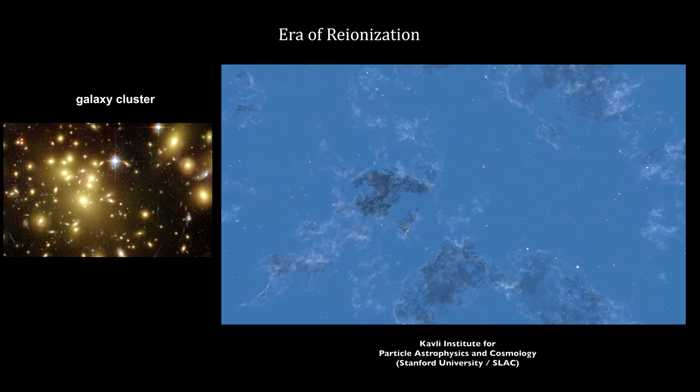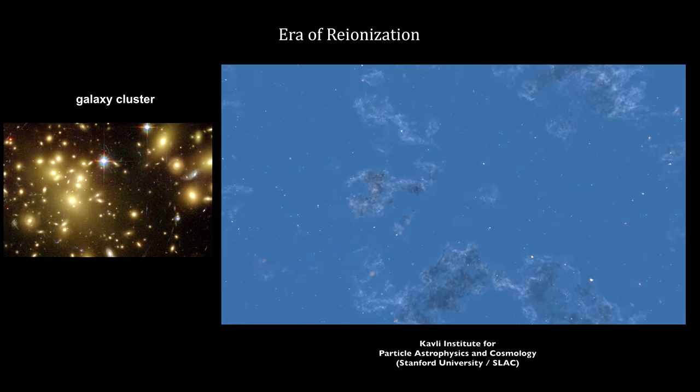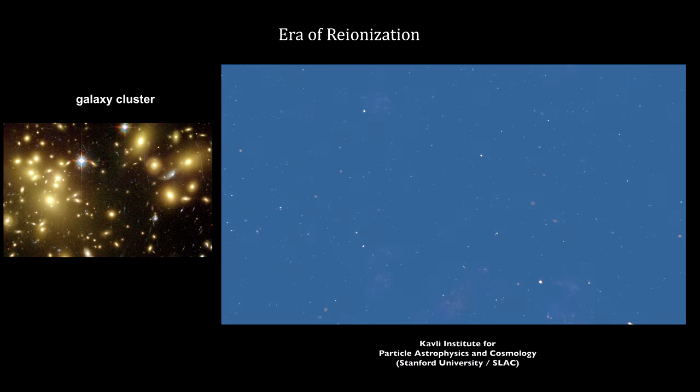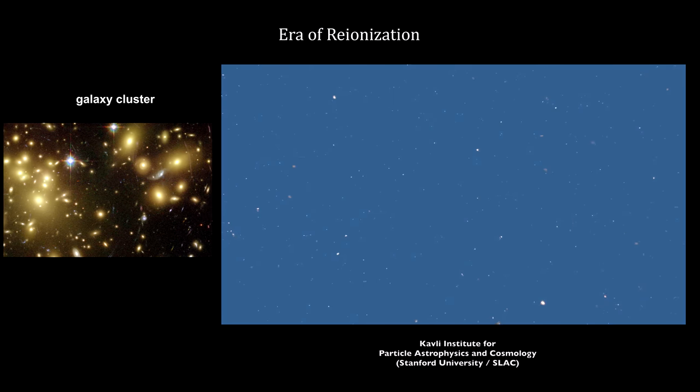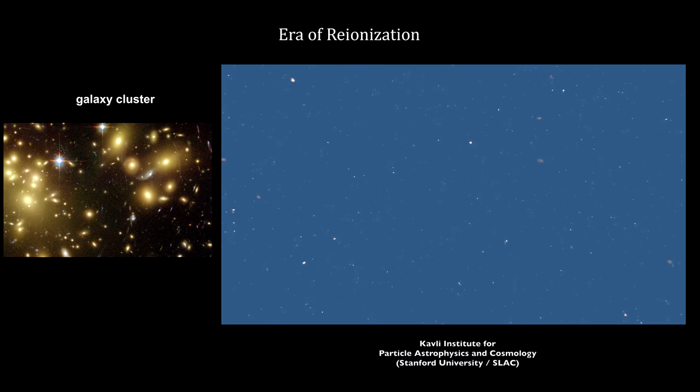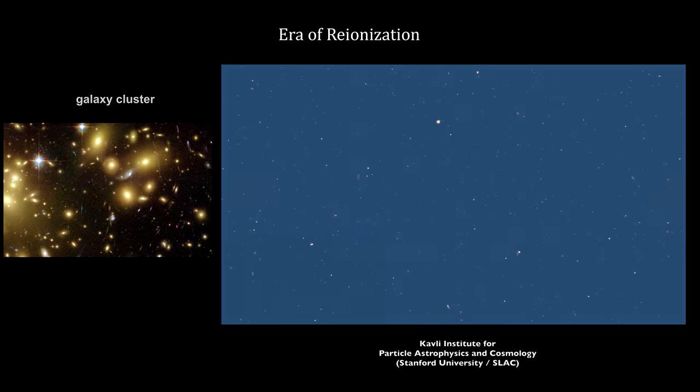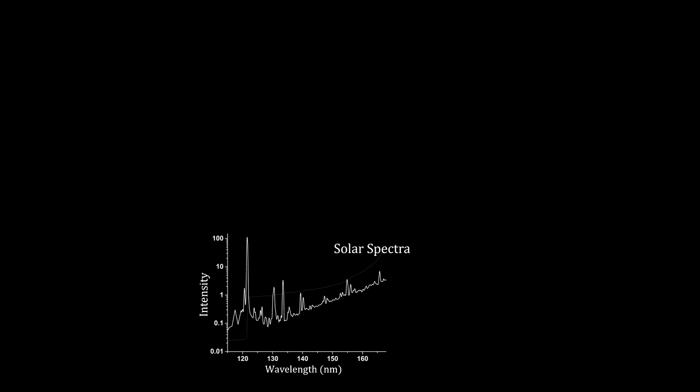In order to better understand how this reionization actually worked, the James Webb Space Telescope was built with infrared capabilities designed to observe this process that began 13 billion years ago. The key to understanding how we can measure the size and growth rates of these ionized regions is in the spectral analysis of the light we receive.